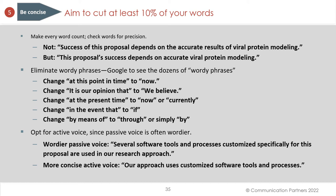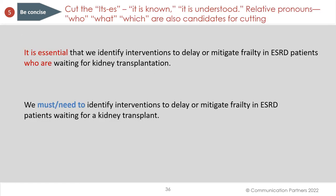Opt for active voice wherever possible since passive voice is often wordier. Compare: 'Several software tools and processes customized specifically for this proposal are used in our research approach' versus 'Our approach uses customized software tools and processes' — look at how many words we cut. Cut the 'it-is' constructions: 'it is known,' 'it is understood' are candidates for cutting. Relative pronouns — who, what, which — are also candidates. 'It is essential that we identify interventions to delay or mitigate frailty in ESRD patients who are waiting for kidney transplantation' becomes 'We must identify interventions to delay or mitigate frailty in ESRD patients waiting for a kidney transplant' — more direct, active, and concise.